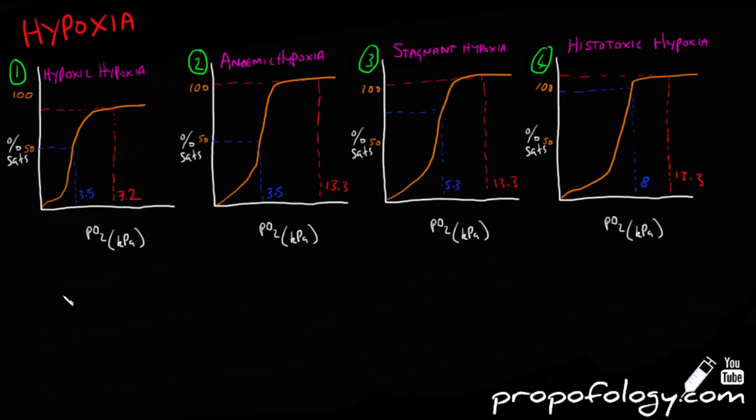So for this next section, you're going to need to have watched our video on the oxygen hemoglobin dissociation curve, or know it really well already. These are graphs showing how the oxygen hemoglobin dissociation curve looks in these different types of hypoxia.